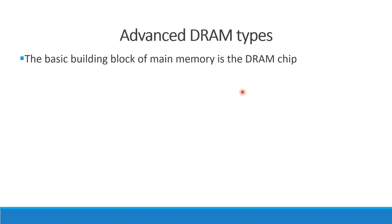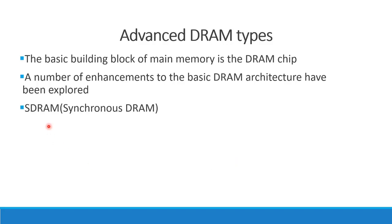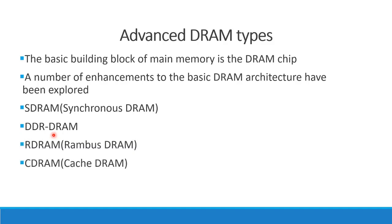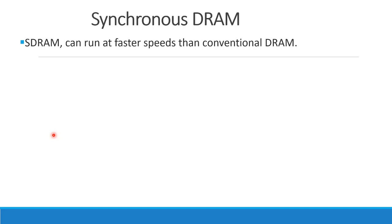The basic building block of main memory is the DRAM chip. In this basic DRAM architecture, there are enhancements available for advanced DRAM types. The main types we will cover are: Synchronous DRAM, DDR RAM (Double Data Rate DRAM), RDRAM or Rambus DRAM, and CDRAM or Cache DRAM. These can run at faster speeds than conventional DRAM.